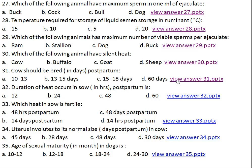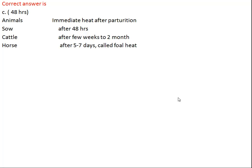Question number thirty-two: heat in sow occurs how many hours postpartum? Option A: 12 hours, Option B: 24 hours, Option C: 48 hours, Option D: 60 hours. The right answer is 48 hours. Sow comes into immediate heat after parturition after 48 hours. In cattle, immediate heat occurs after a few weeks to two months postpartum. In horse, immediate heat is seen after 5 to 7 days — also called foal heat.